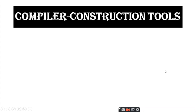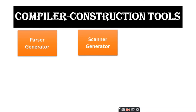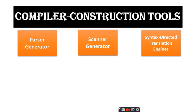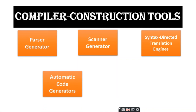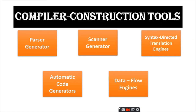Compiler construction tools include: parser generators, which produce syntax analyzers from context-free grammar; scanner generators, which automatically generate lexical analyzers from specifications based on regular expressions; syntax-directed translation engines, which produce a collection of routines that walk the parse tree; automatic code generators, which take rules defining the translation of each intermediate language operation into machine language; and data flow engines, which gather information needed for good code optimization through data flow analysis.